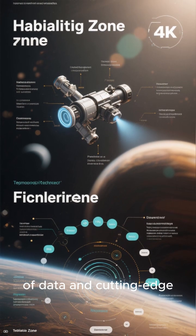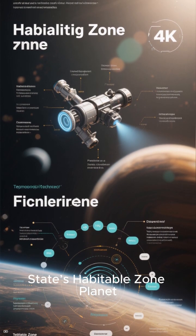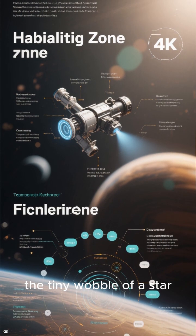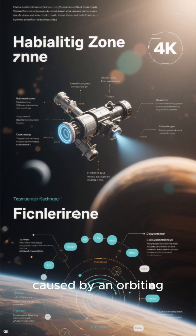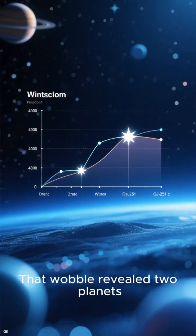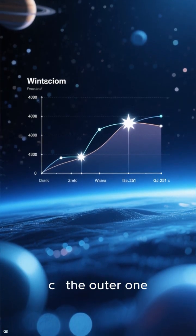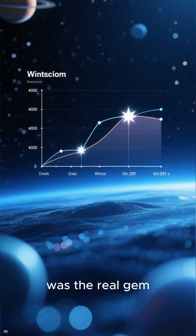This discovery comes after 20 years of data and cutting-edge tech from Penn State's Habitable Zone Planet Finder—a special instrument that detects the tiny wobble of a star caused by an orbiting planet's gravity. That wobble revealed two planets, and GJ 251c, the outer one, was the real gem.